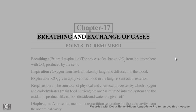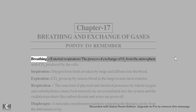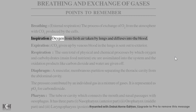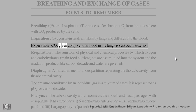Chapter 17: Breathing and Exchange of Gases — Points to remember. Breathing, or external respiration, is the process of exchange of O2 from the atmosphere with CO2 produced by the cells. Inspiration: oxygen from fresh air is taken by lungs and diffuses into the blood. Expiration: CO2 given up by venous blood in the lungs is sent out to the exterior.